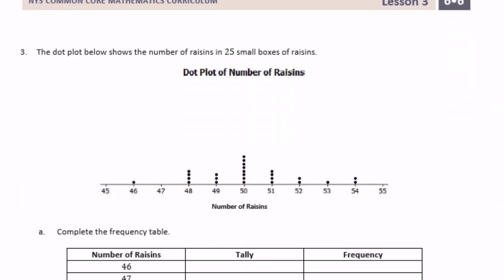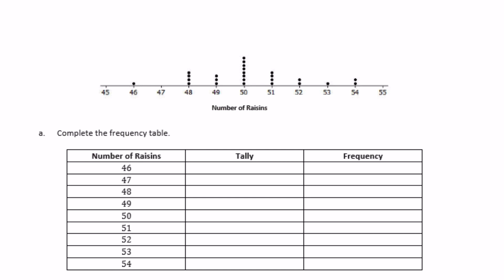Number 3. The dot plot below shows the number of raisins in 25 small boxes of raisins. Complete the frequency table. So for 46 raisins, so we're just going to look at the dot plot and transfer the data onto the frequency table. So for 46 raisins right here, there was only 1.